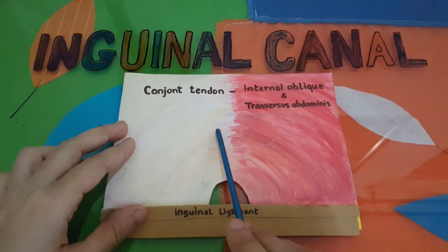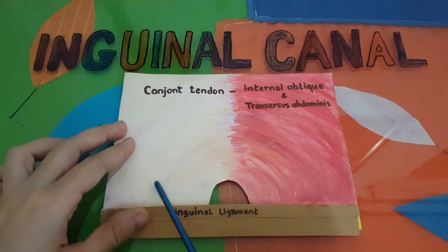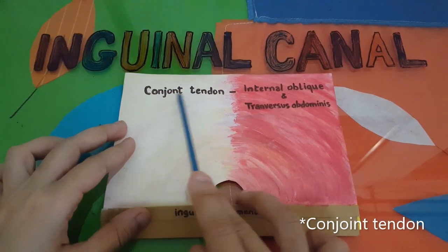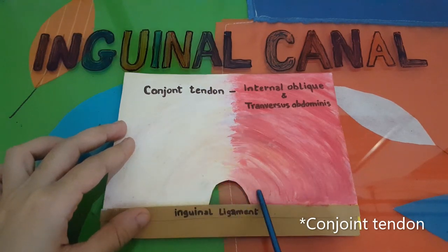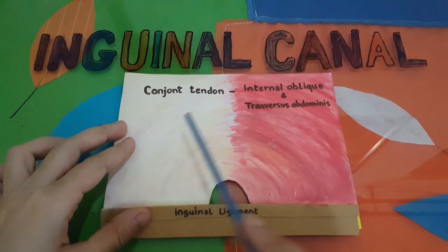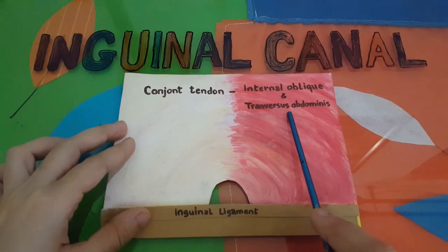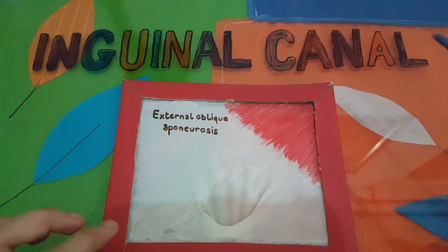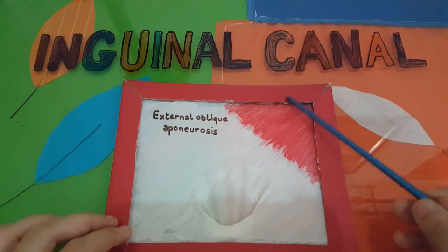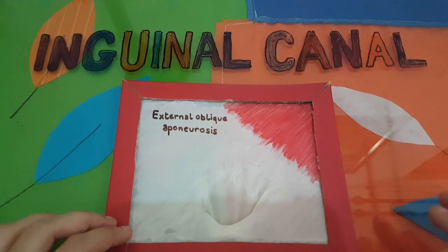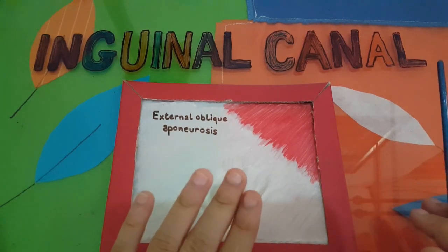Their fibers arch around and insert on the inguinal ligament as a single tendon called the conjoint tendon. These arching fibers are called the musculo-aponeurotic fibers of the internal oblique and transversus abdominis muscle. The outermost layer is the external oblique aponeurosis — the muscle itself ends quite laterally and in the inguinal region only the external oblique aponeurosis is present.